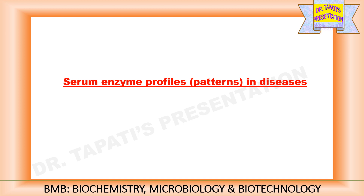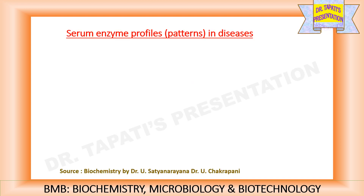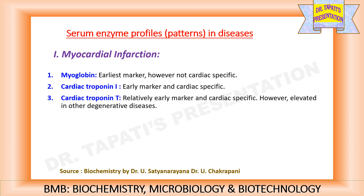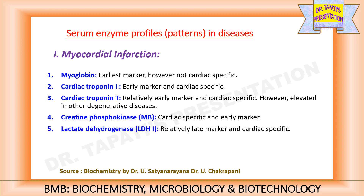Let's see serum enzyme profiles and diseases one by one. First, serum enzyme profiles in myocardial infarction. Increased level of myoglobin is the earliest marker, however not cardiac specific. Cardiac troponin I is the early marker and cardiac specific. Cardiac troponin T is the early marker and cardiac specific, however elevated in other degenerative diseases. Increased level of creatine phosphokinase MB is cardiac specific and an early marker. Whereas lactate dehydrogenase isoenzyme 1 is a relatively late marker and cardiac specific. Aspartate transaminase is not cardiac specific.